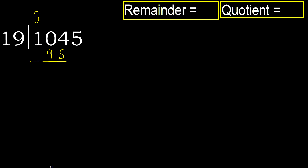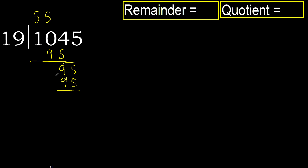Subtract: 104 minus 95 is 9. Next — 95 multiplied by 5, ok, is not greater. Subtract. Next — that is not a number, therefore finish.